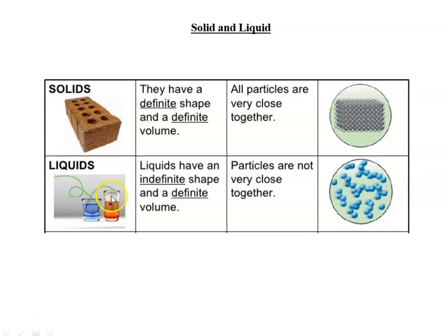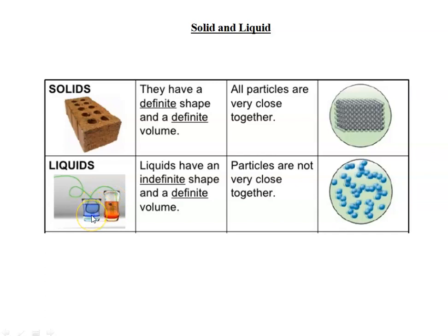One glass is taller and the other is wider. The water level sits higher in the taller glass. The amount of water in both glasses is the same, but because the glasses have different shapes, when you transfer the water from one to the other the shape of the water changes while the volume stays the same. This confirms that liquid has indefinite shape but definite volume.